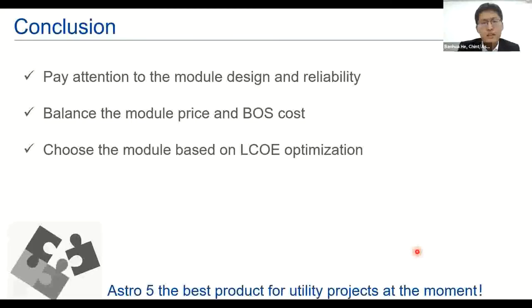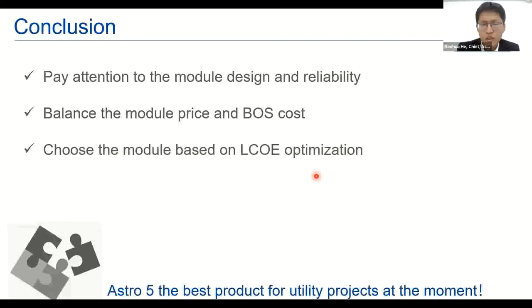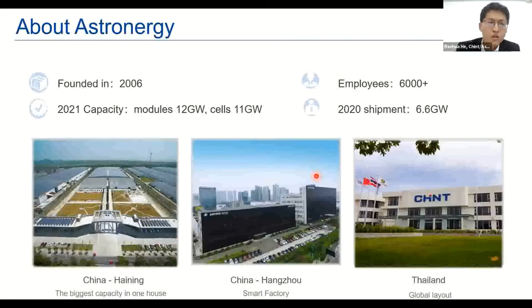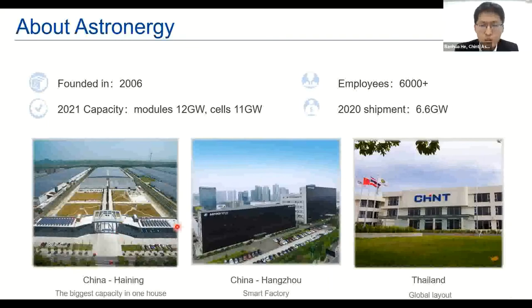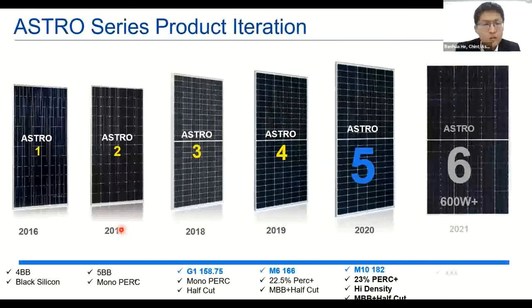My conclusions: we need to pay attention to module design and reliability, balance module price and bifacial cost, and choose modules based on LCOE optimization. At present, I think TRO5 is the best product for utility projects. To introduce our company, Astronergy/Chint Solar: founded in 2006, module capacity is 12 gigawatts this year, with shipment volume of 6.6 gigawatts last year. We have four factories — three in China and one in Thailand. Last year we released TRO5, and we will release TRO6 with more than 600 watts in the next few months, with total capacity reaching 21 gigawatts over the next four years.